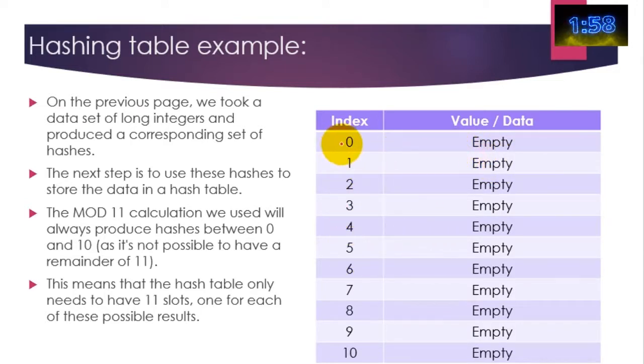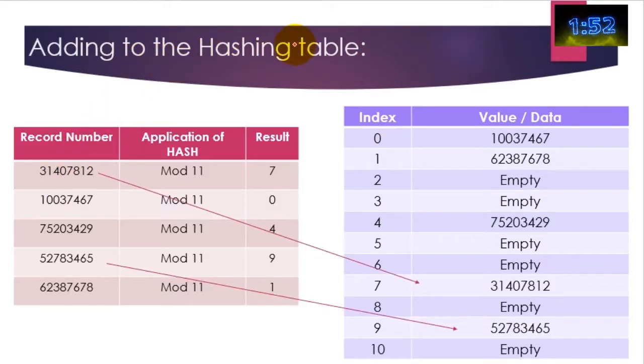So let's see this in action—adding to the hash table. Let's take this record number here and apply the modulus 11 hash. What it does is it produces the result of seven. So that number there, let's say divided by 11, gives you the remainder of seven, and therefore this record number is stored in index seven because the hash value was seven. The hash value seven tells us that we need to store the value in index seven, and so you'll notice that this record has now been stored here.